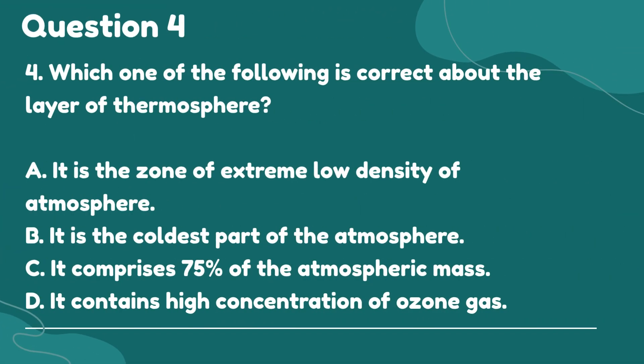Question 4. Which one of the following is correct about the layer of the thermosphere? A. It is the zone of extreme low density of atmosphere. B. It is the coldest part of the atmosphere. C. It comprises 75% of the atmospheric mass. D. It contains a high concentration of ozone gas.